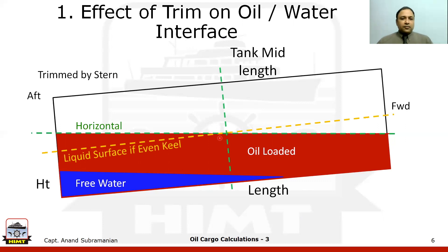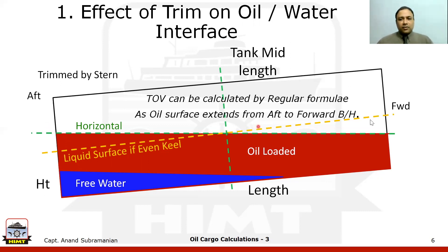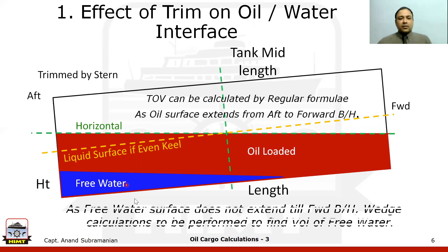In the first process, we have to find out the liquid surface even keel — that is the ullage at the centre of the tank mid-length — so the total observed volume can be found out by the regular formula, because the tank surface is touching both the aft and forward bulkheads. Once that is done, we have the total observed volume, which also has some component of free water. To find and remove this free water component, we have to separately perform wedge calculations, because the surface of the free water does not reach the forward bulkhead — it stops well before it. So the free water is forming a wedge.